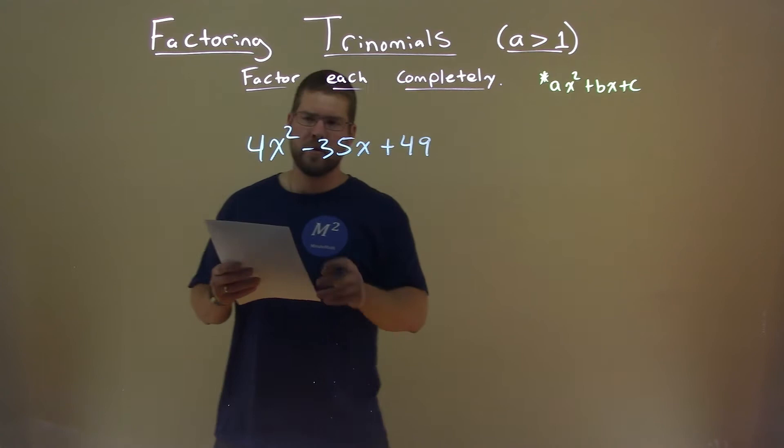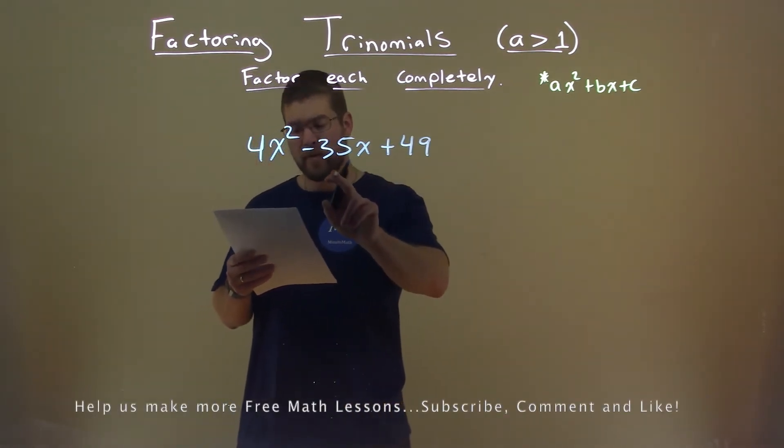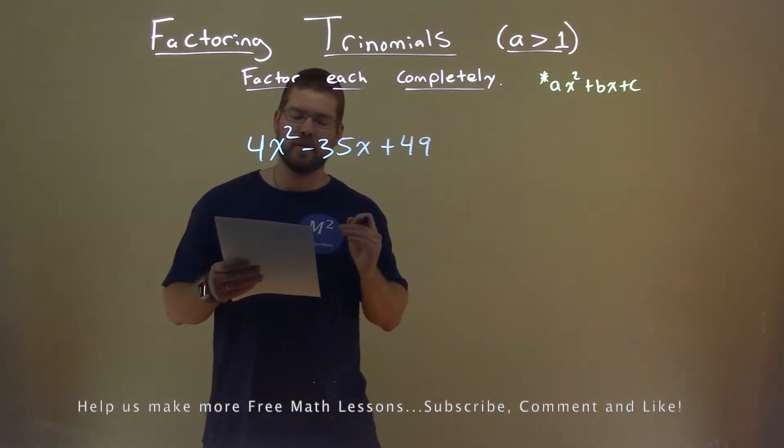We're given this problem right here, 4x squared minus 35x plus 49, and we need to factor this completely.